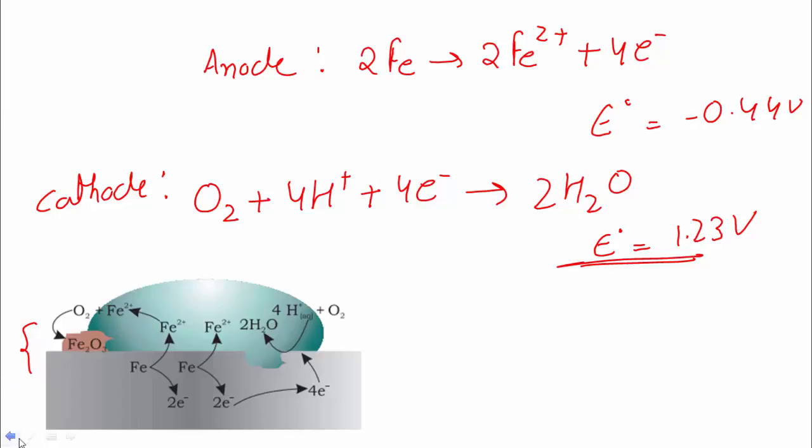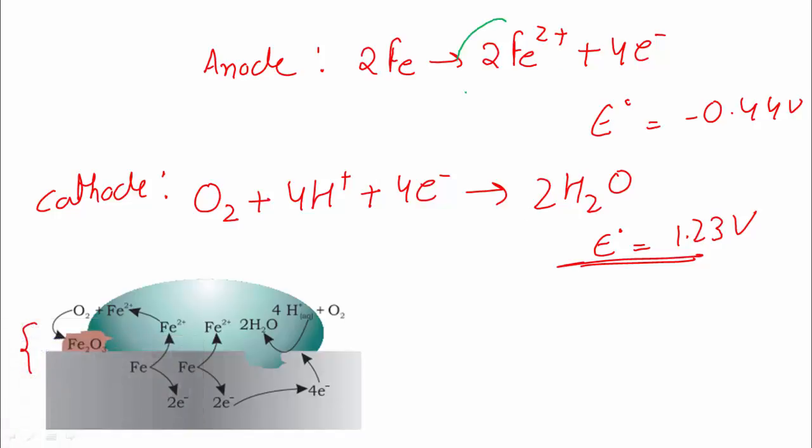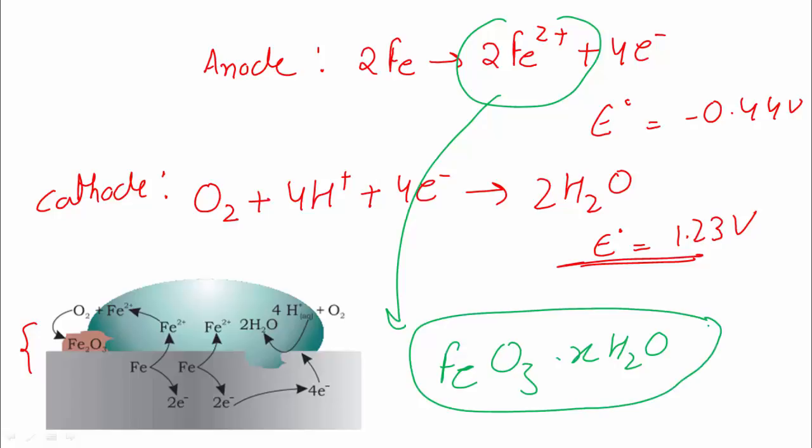Fe2+ iron produced here is further oxidized by atmospheric oxygen to give Fe2O3·xH2O, which is the typical formula for rust. These are the reactions involved and these are the cell potentials.